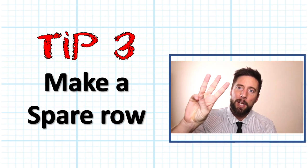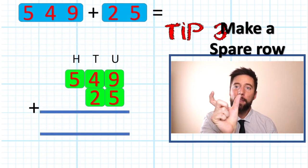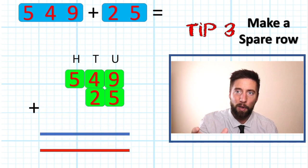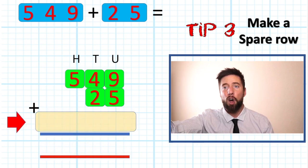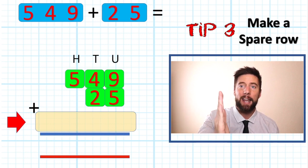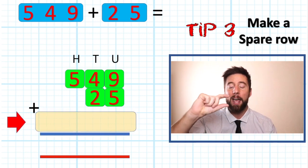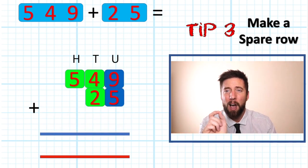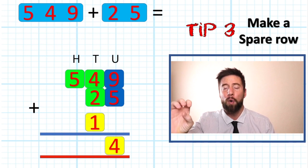Tip number three, my personal favourite. We're going to bring this bar, this little line, we're going to bring it down. That now creates a spare row for anything we are bridging. If we are now regrouping into the next column, we have got a proper row to put that number. Not just squeezing it above the line, we have got its own actual row.